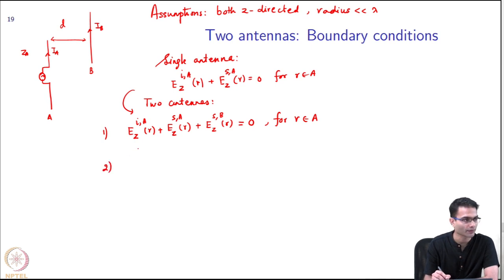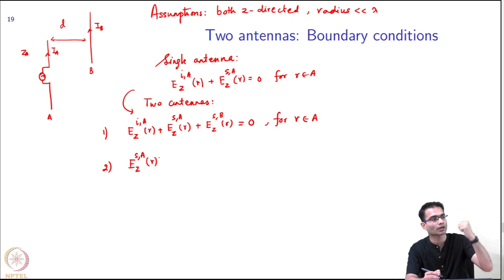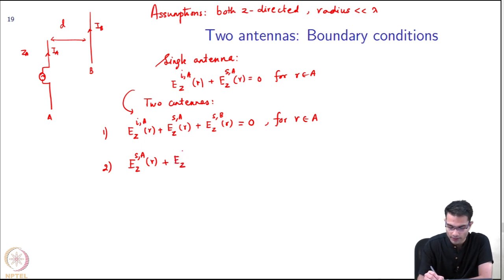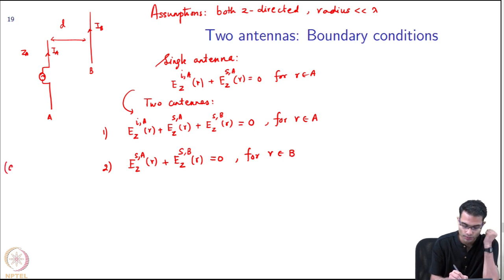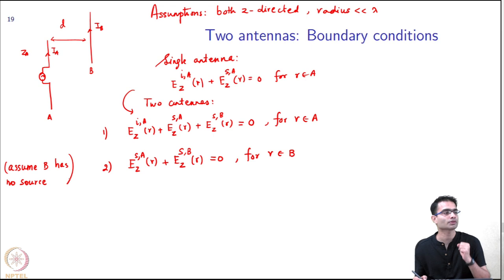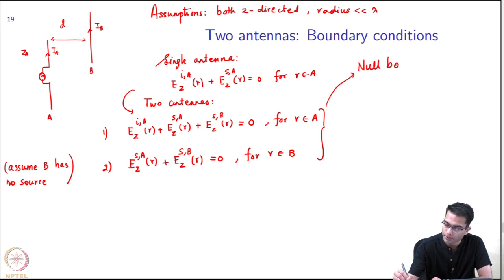Very simply they will be - let us take two cases: R belongs to A and R belongs to B. The first case, what will I write? E_z^(i,A)(R) + E_z - this is the self field - and some scattered field due to B being measured on A. This must be equal to 0. Second boundary condition, what will be the first term? There is going to be E_z scattered from A. This is the field that is produced due to current in A falling, producing a field, and that field falling on B. And E_z^(s,B)(R) = 0 for R belonging to B. We assumed B has no source. These two conditions, there is a name for them - they are called null boundary conditions.